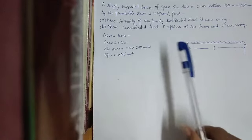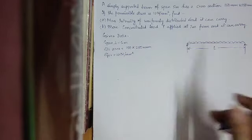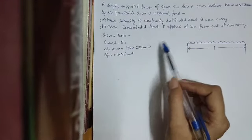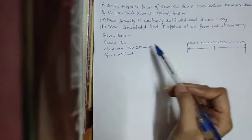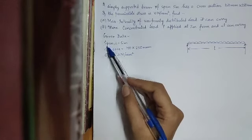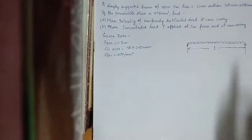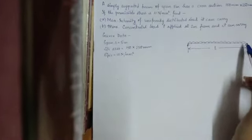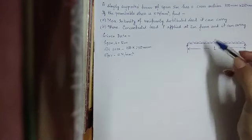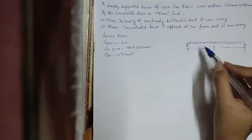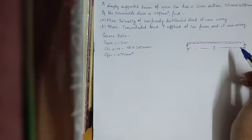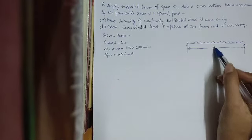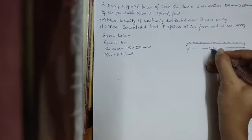So let us first identify the data which is provided in this problem. We have the span of the beam given. Suppose this is a beam which I have represented with a line and these two arrows denote the support and certain amount of loading is being applied on the beam. The span of the beam is given which is equal to 5 meters.